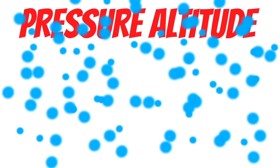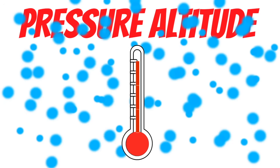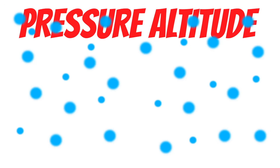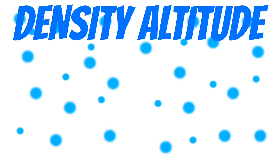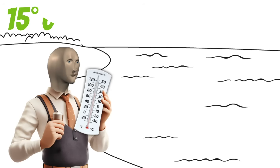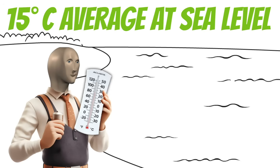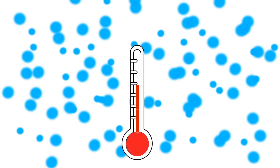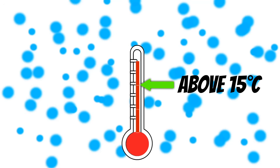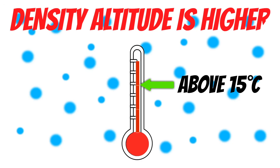Another thing we use pressure altitude for is performance calculations. Pressure altitude is a great starting point for performance calculations because your airplane doesn't care about true altitude — it cares about the thickness of the air. Pressure altitude is a pretty good indicator of the thickness of the air, but it's not perfect because temperature can actually make the air thinner as well. Because of this, there's one more type of altitude that you need to know about as a pilot, and that's density altitude. Density altitude is pressure altitude that has been corrected for non-standard temperature.